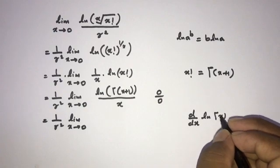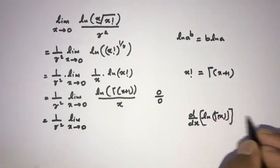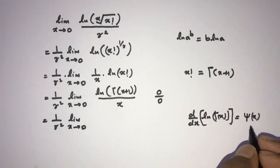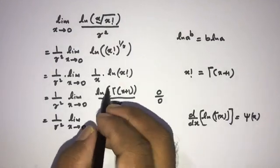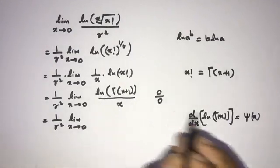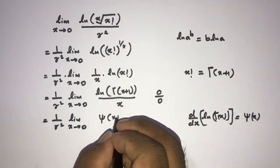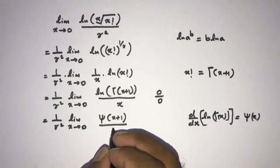So we know the derivative of natural log of gamma of x is equal to digamma of x. Now here, we know the derivative of natural log gamma of x plus 1 is equal to digamma of x plus 1, over derivative of x is equal to 1.